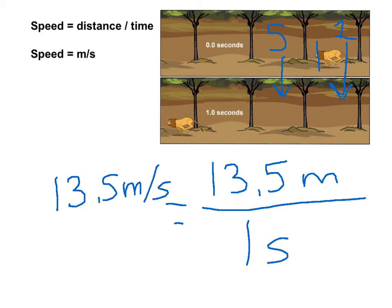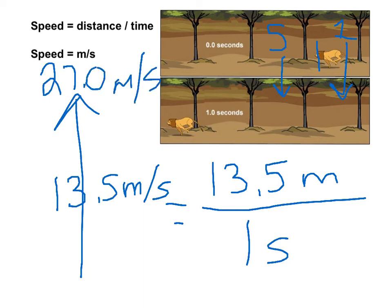What that means is pretty straightforward: every second, that lion is going to travel 13.5 meters. So if we let him go another second, he would have traveled 27.0 meters.